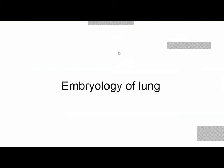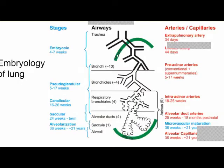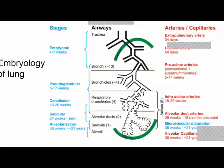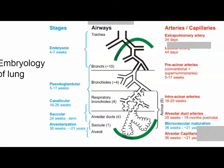Before discussing CPAM, let's cover lung embryology. It can be divided into various stages. The first is the embryonic stage, beginning at four weeks. Lung development starts from the cranial end of the foregut. Initially a laryngotracheal diverticulum is formed, which gradually increases in size. A tracheoesophageal fold forms a septum, separating two tubes. This takes about four to seven weeks, and the primary bronchi are also formed during this stage.